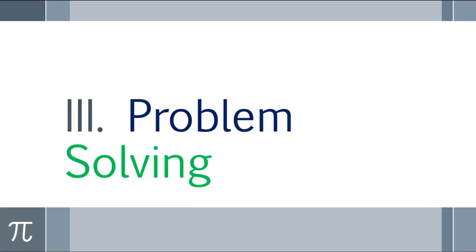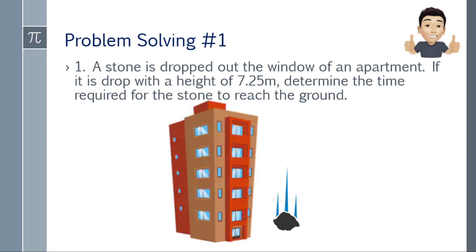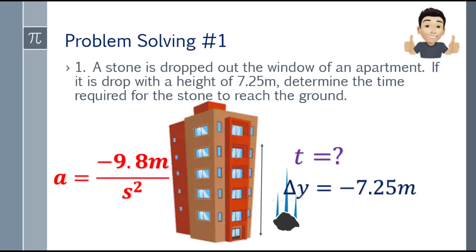Let's go to problem solving. First problem: a stone is dropped out the window of an apartment. If it is dropped from a height of 7.25 meters, determine the time required for the stone to reach the ground. Acceleration is negative 9.8 meters per second squared. Delta y is negative 7.25 meters — it's negative because the drop point is the origin, and the landing point is below it on the Cartesian plane.